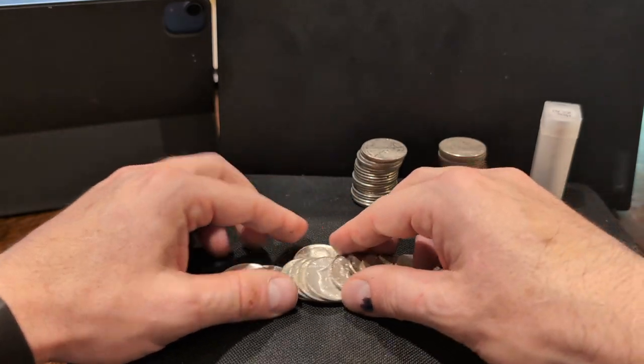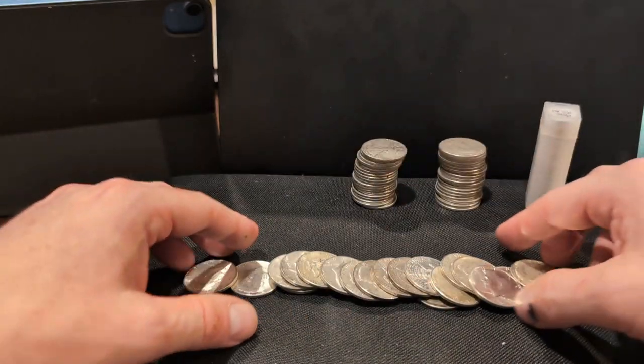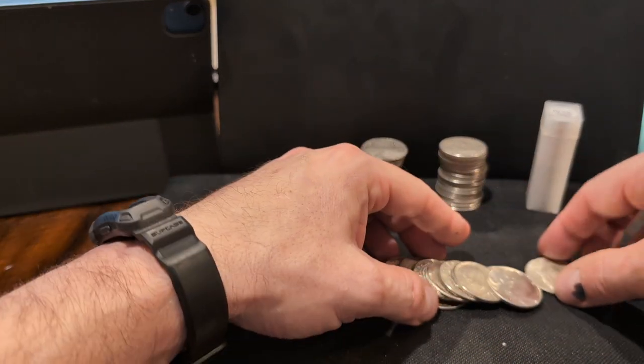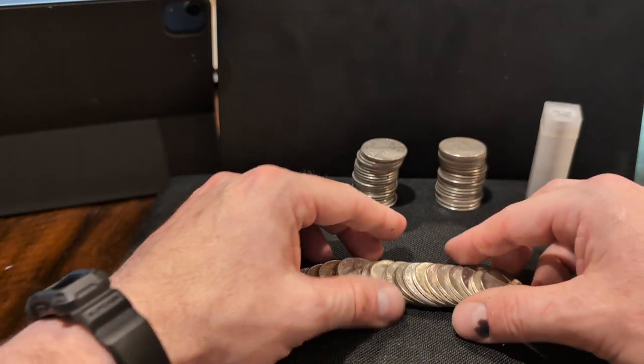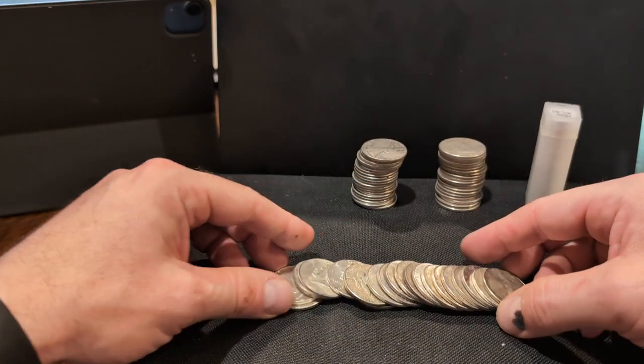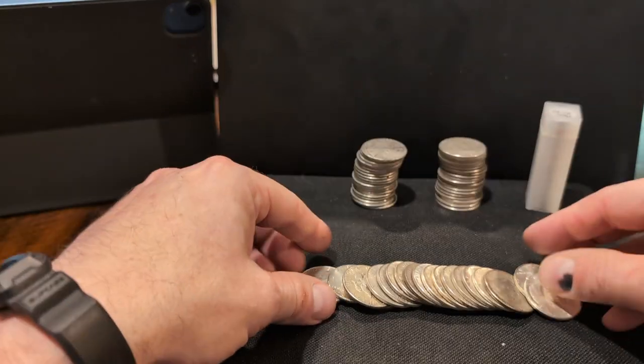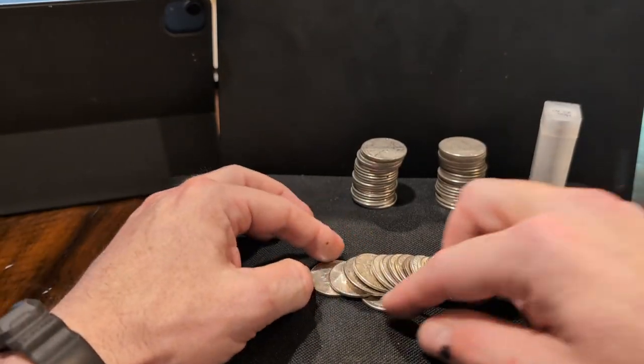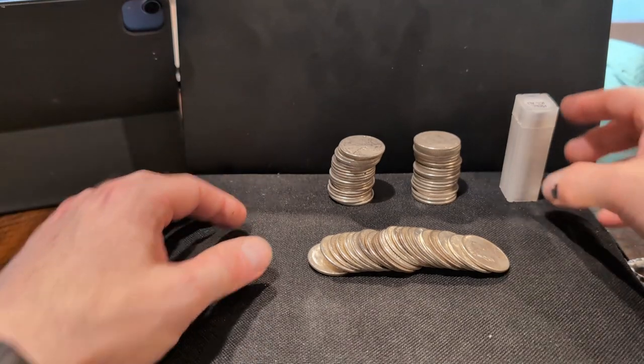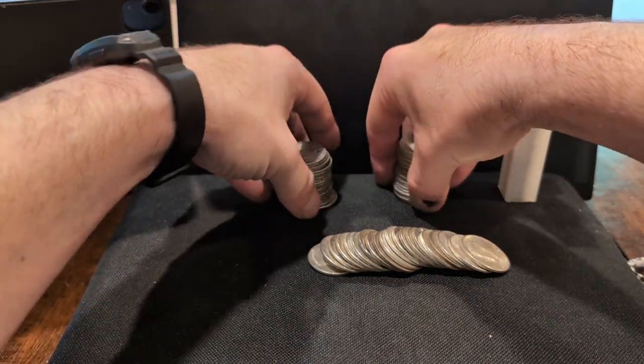So I got the half dollars. I think the only other half dollar I can get would be the Barber halves, and those seem to be incredibly expensive and so heavily circulated that when you find some they just look like smooth discs of silver. So that's gonna be the extent of my little mini stack of 90% silver.